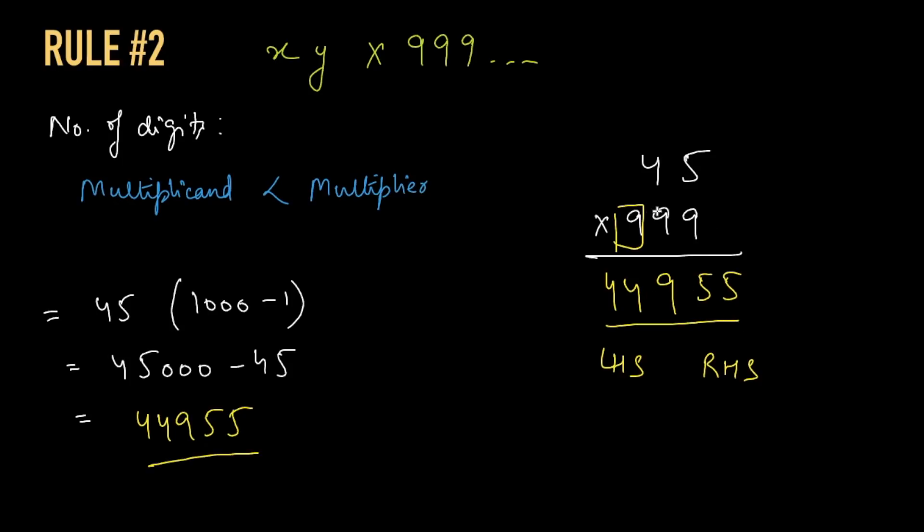Right, so Rule 2 says that whenever the multiplier has more 9s, more digits, we have to ignore the extra 9s and then find the answer according to Rule 1 for LHS and RHS. And the extra 9s we omitted, we have to write them between the LHS and RHS. Let's say if there was another 9 in this example, we would have omitted one more 9, because there would be 4 nines, 4 digits. And we would have found out the answer according to the 2 digits that we have. In that case, LHS would be 45 minus 1, which is 44. RHS would be the complement of 45, which would have been 55. And we write the extra 9s between these LHS and RHS. So the answer would have been 449955.